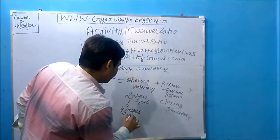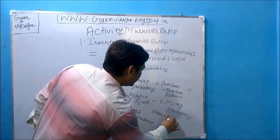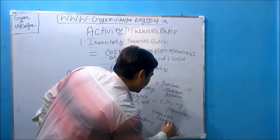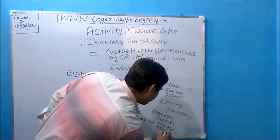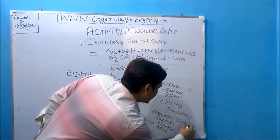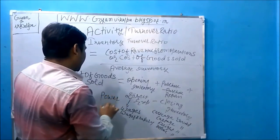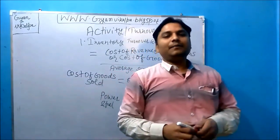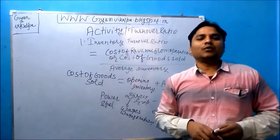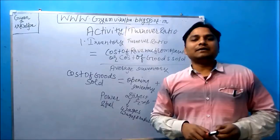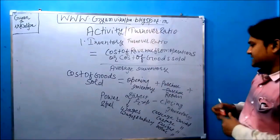Direct expenses include wages and salary, carriage inward, cartage inward, freight inward, octroi, power and fuel — in short, all debit-side expenses of the trading account from Class 11. So cost of goods sold equals opening inventory plus net purchases (purchase minus purchase return) plus direct expenses minus closing inventory.